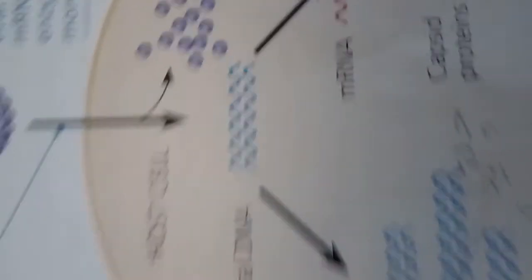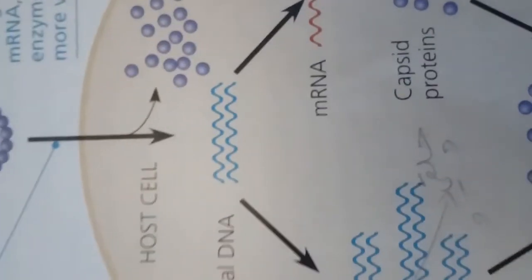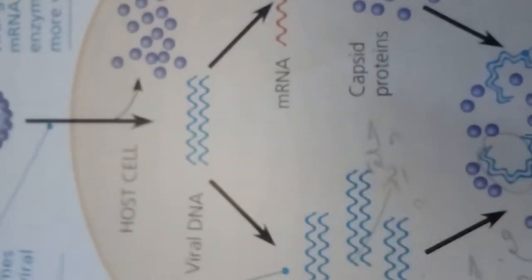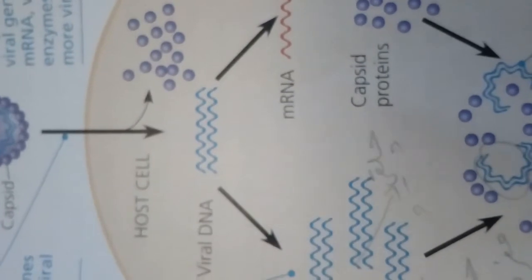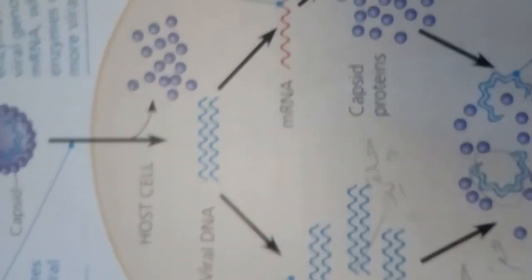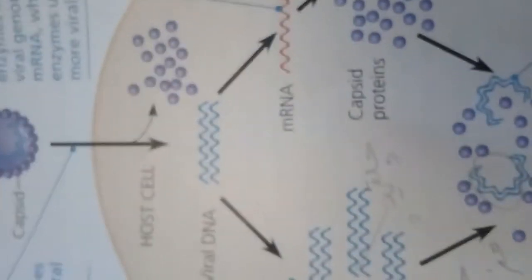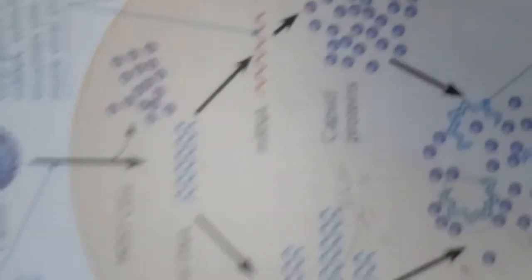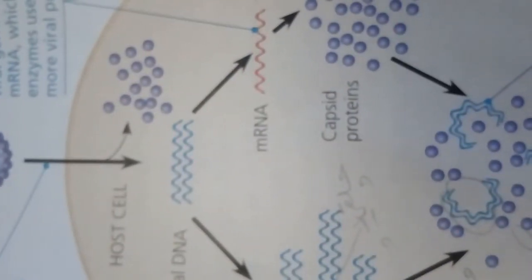Each type of virus can infect only a limited range of host cells, called its host range. This host specificity results from the evolution of recognition systems by the virus. Viruses identify their host cells by a lock-and-key fit between proteins on the outside of the virus and specific receptor molecules on the surface of cells.